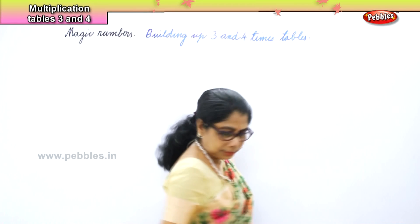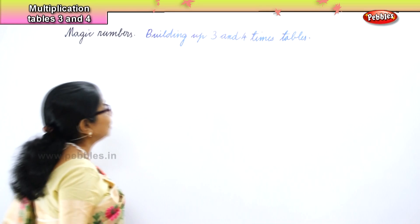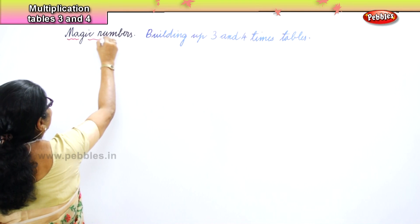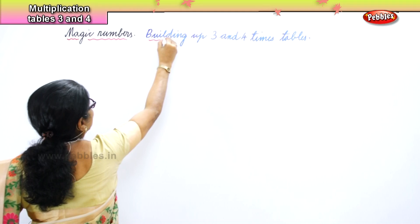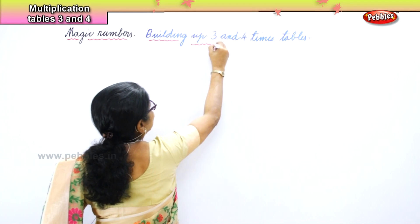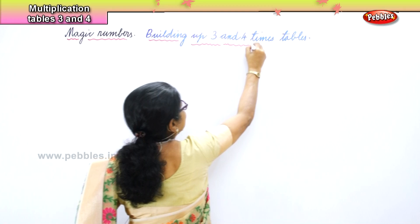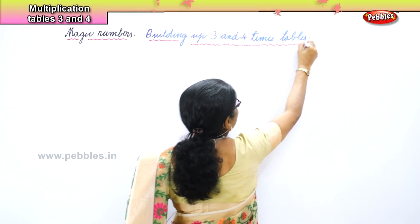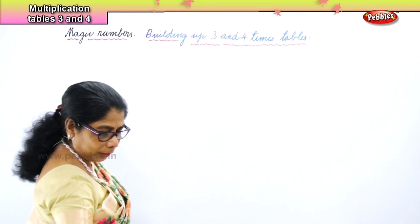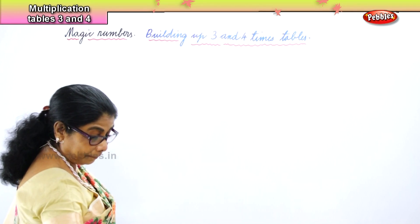Three and four times table. Now how are we going to do that? Magic numbers! I said magic numbers — you love magic, and that's why we are going to use numbers to make our tables. Now let's look at it. First we are going to do the three times table.